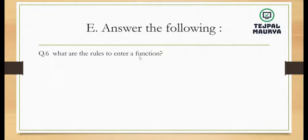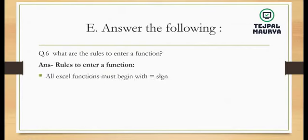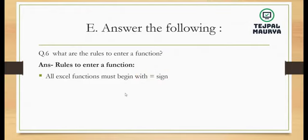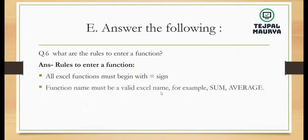Question 6: what are the rules to enter a function? Rule one: all functions must begin with the equal sign — this is very important, every function in Excel starts with an equal sign, just as formulas do. Rule two: the function name must be a valid Excel name, for example SUM or AVERAGE — it must exist in Excel's function library.